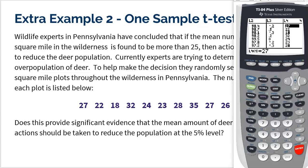So we're going to go STAT, EDIT, and we're going to enter this data in. I entered it into list 4. You can use any list you want. But in list 4, I entered 27, 22 deer, 18 deer, 32 deer, 24 deer, 23 deer, 28, 35, 27, and 26.